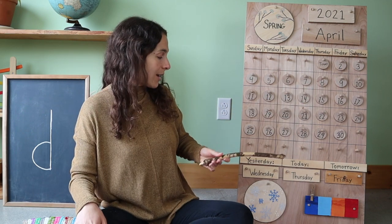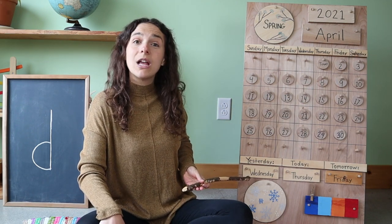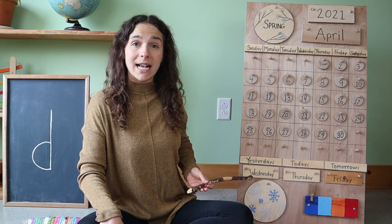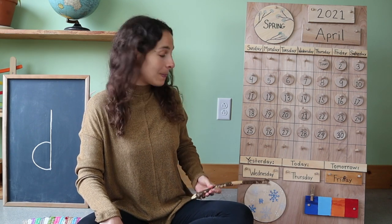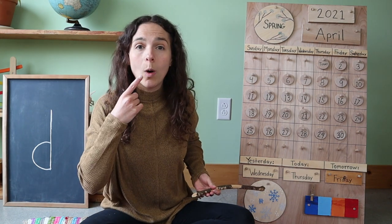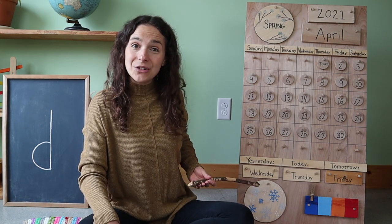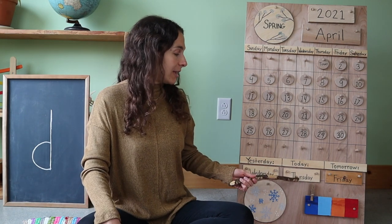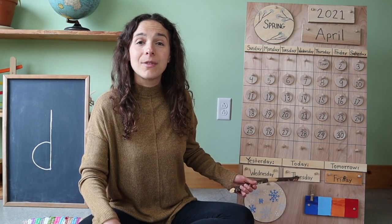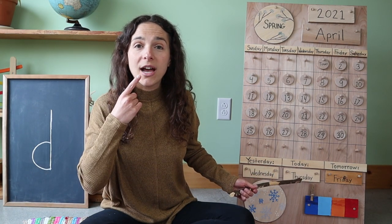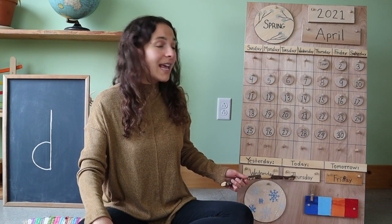Let's travel down to the bottom of the chart right down here. Do you remember what the day was yesterday? Here's your clue — yesterday was W. Wednesday, yesterday was Wednesday. So that means that today is Thursday.